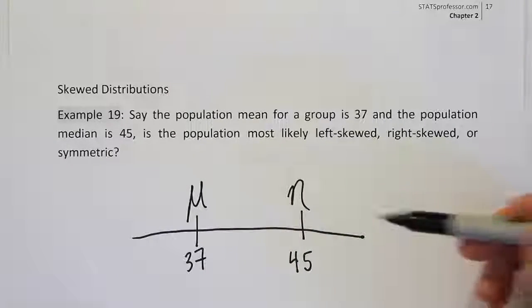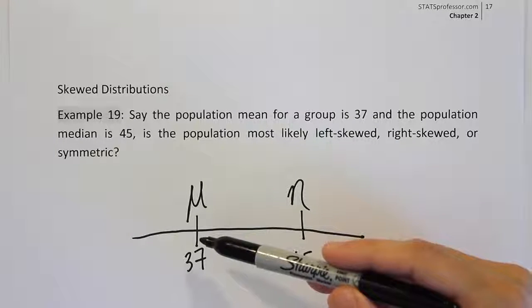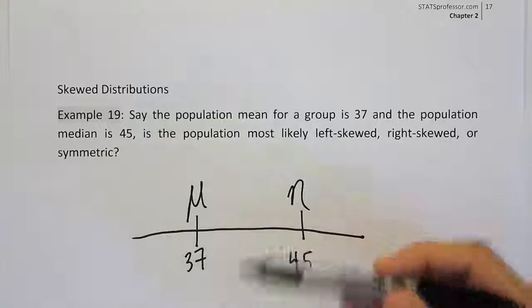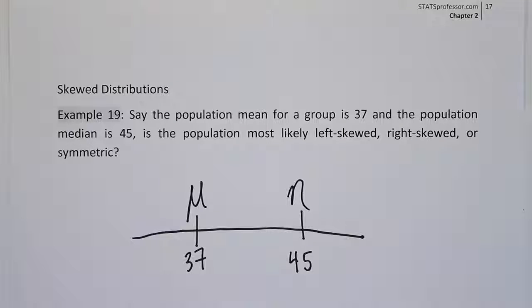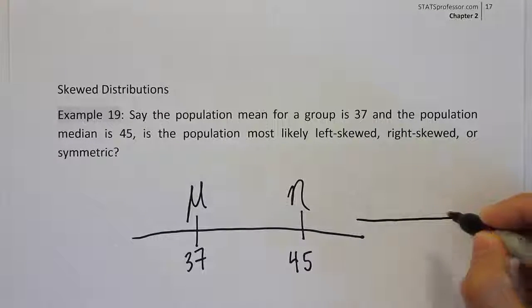Well, based on some drawings that you would have seen in the notes, we can tell that when the mean is on the left, it means the distribution is most likely left skewed. That means it would have sort of a skinny tail on the left-hand side of the drawing. So we're looking at this sort of drawing where the drawing looks like this.